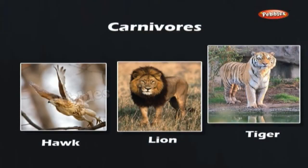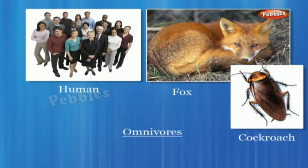Carnivores are organisms that obtain their food by feeding on the meat and flesh of other animals, e.g. hawk, lion, tiger etc. Omnivores are organisms that obtain their food by feeding on both plants and animals, e.g. humans, cockroaches, fox etc.